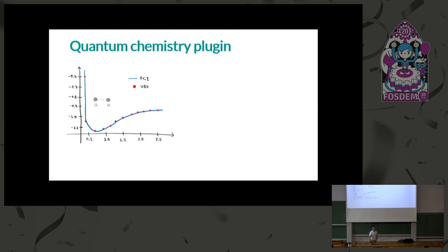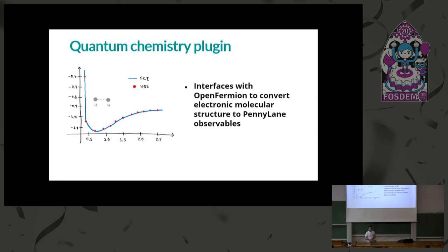We also have a new quantum chemistry plugin. One of the first variational quantum algorithms that created the QML wave was the VQE algorithm — the Variational Quantum Eigensolver — which allows quantum computers to probe the electronic molecular energies of various molecules. PennyLane now interfaces with OpenFermion, the open source quantum library by Google's quantum team. Using OpenFermion, you can convert any electronic molecular structure to a set of quantum observables, which are now importable into PennyLane for training on quantum hardware.